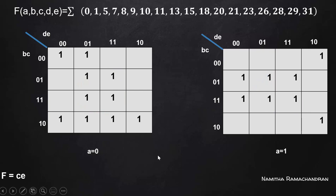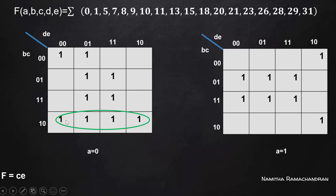Next, we consider another combination. For a particular group in the KMAP, the maximum possible matching cells correspond to a full row of 1s. A equal to 0 is common for these cells, B equals 1 and C equals 0 are common, while D and E values differ across the four cells. So the minimized representation for this group is A-complement, B, C-complement.